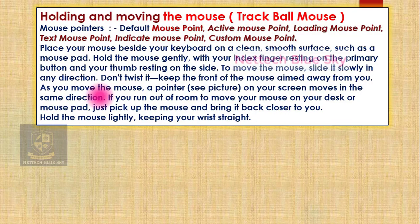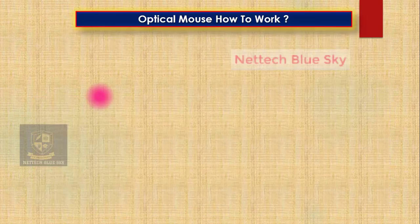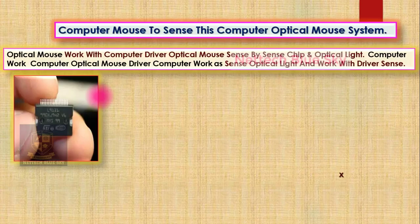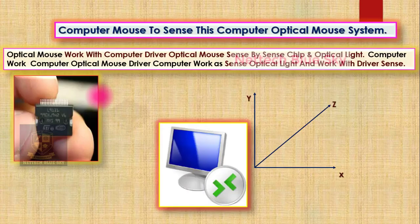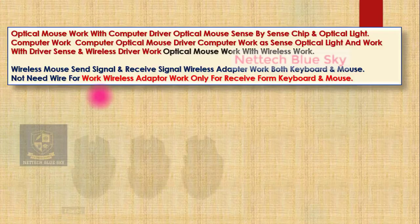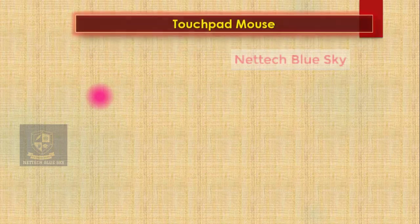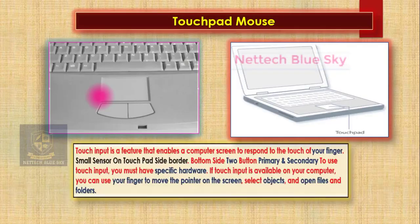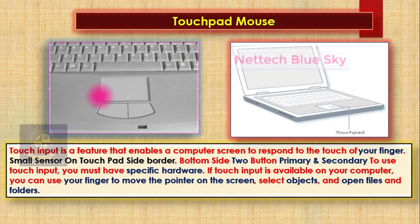I covered holding and moving the mouse, the trackball system, optical mouse, how the replacement systems and mechanism work. Optical mouse has different types, technologies, and how it sends and receives using wireless technology. I also created a previous video on the touchpad type and how it works.